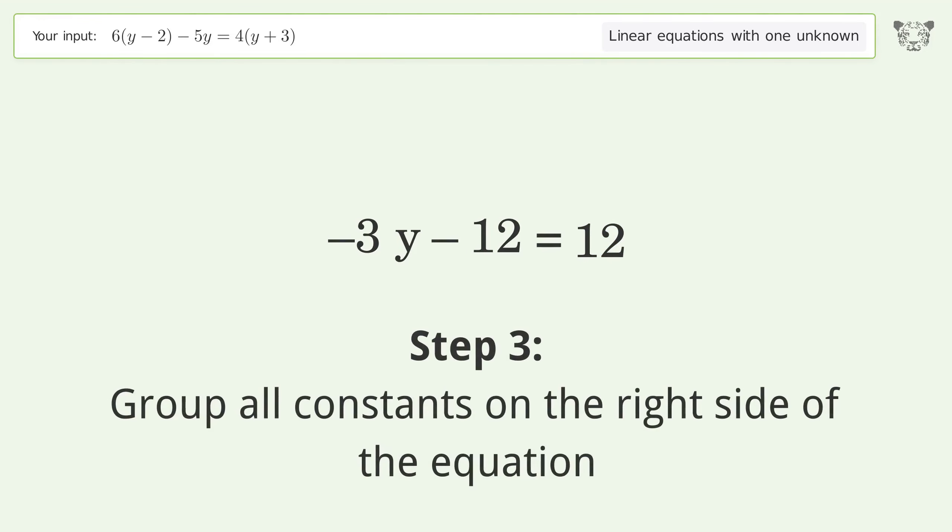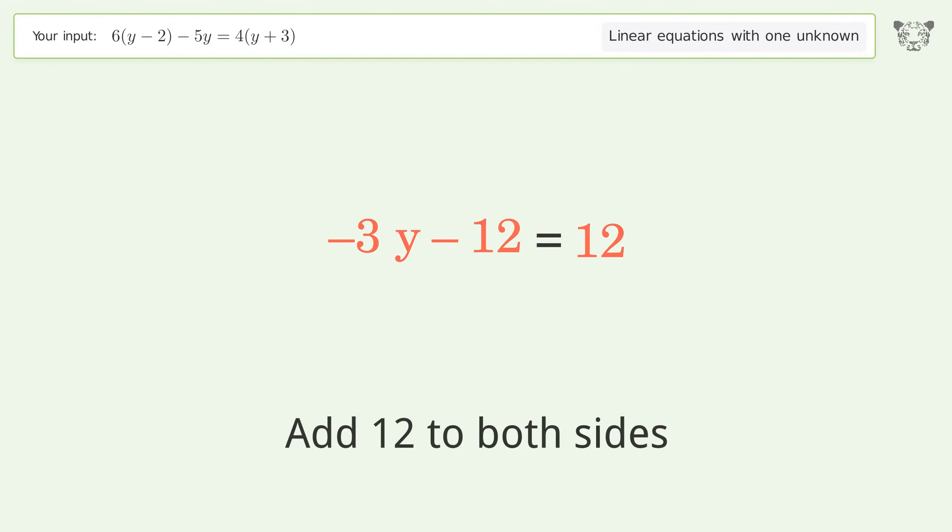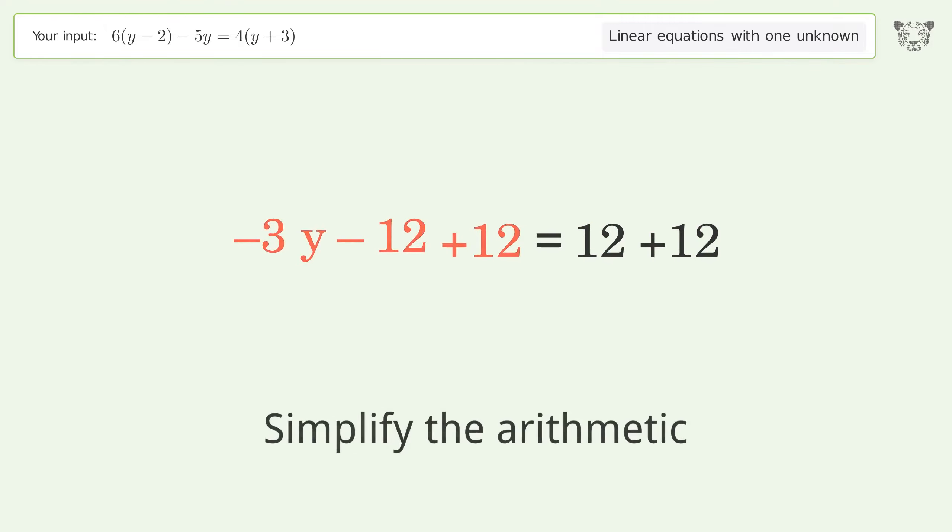Group all constants on the right side of the equation. Add 12 to both sides. Simplify the arithmetic.